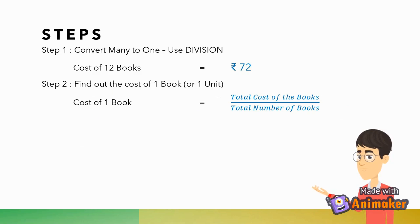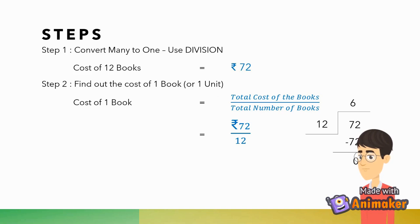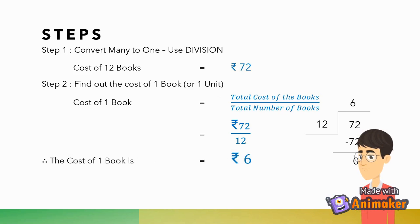The cost of one book is equal to the total cost of the books divided by the total number of books. So, 72 divided by 12 gives us the result as 6. But remember, this is the cost of one book.